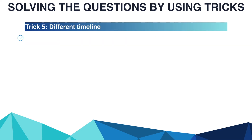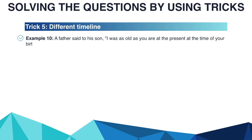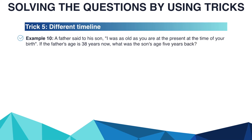Let's take another example. A father said to his son: 'I was as old as you are at present at the time of your birth.' If the father's age is 38 years now, what was the son's age 5 years back? Please try to solve this problem and write the answer in the comment box.